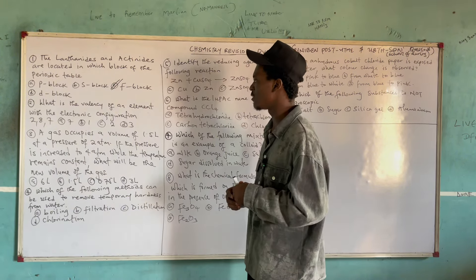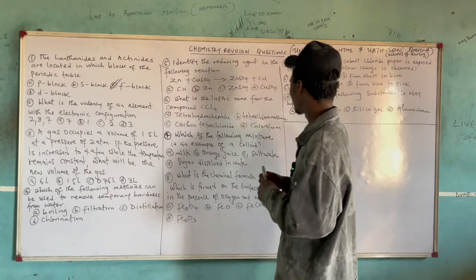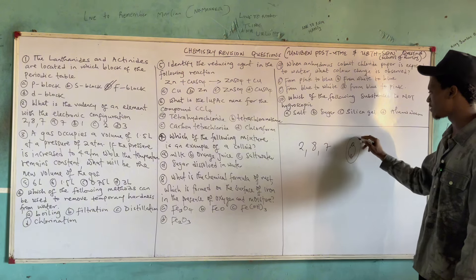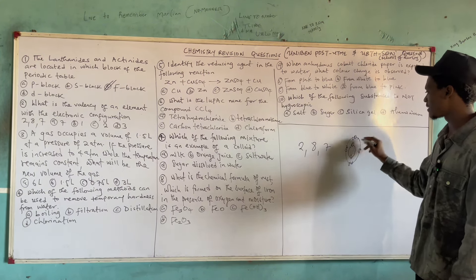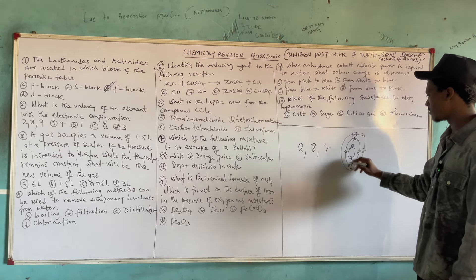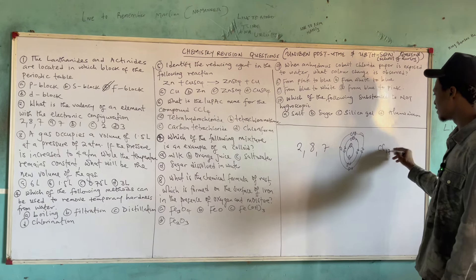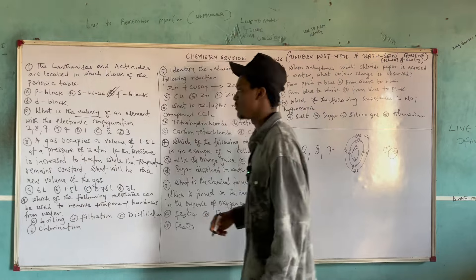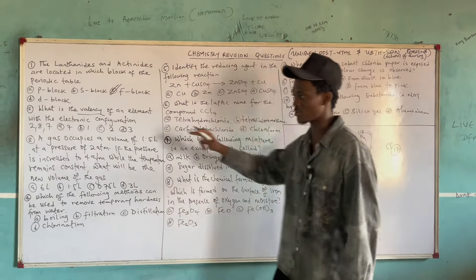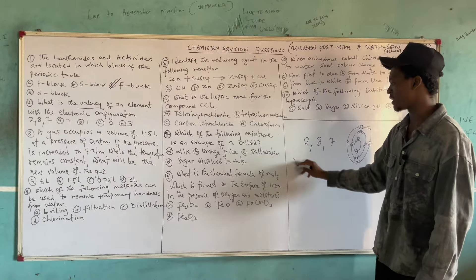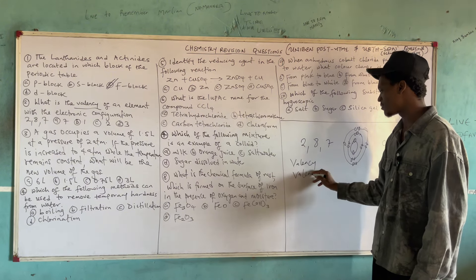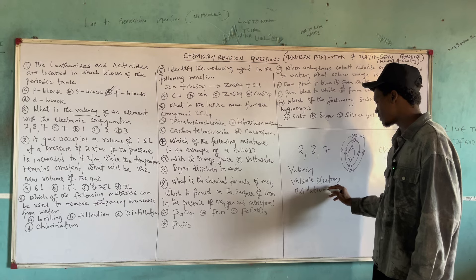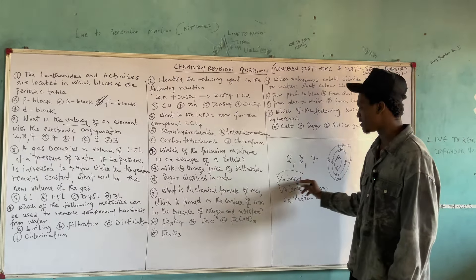Question 2: What is the valency of an element with the electronic configuration 2, 8, 7? This means the first shell takes 2 electrons, the next takes 8, and the last takes 7. This element is chlorine with atomic number 17. The question asks for valency, which is tricky — they are not asking for valence electrons. You must understand the difference between valency, valence electrons, and oxidation number.